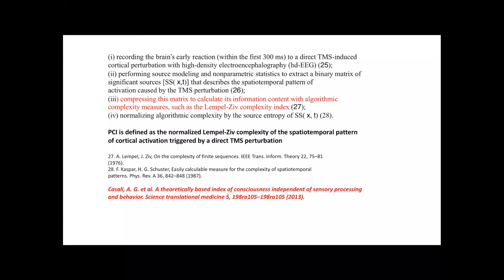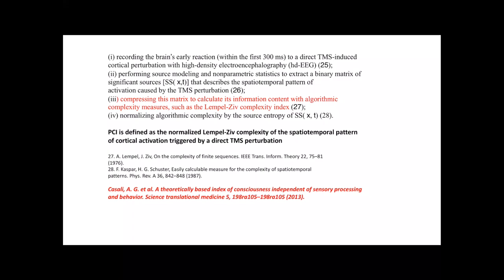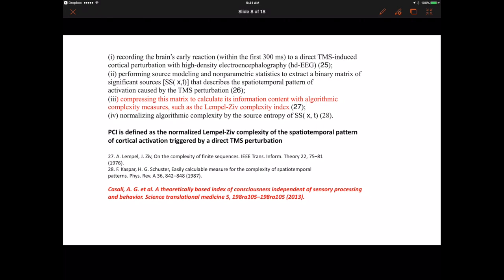You see the stepwise procedure that is utilized in implementing this PCI, Perturbation Complexity Index. So you do a recording of the brain's activity in response to a transcranial magnetic impulse and you record the cortical perturbation with a high density EEG. So these are like 200 plus electrodes distributed over your scalp. Now then you capture the signal, the time series coming from all 200 plus electrodes and you model this in a specific statistical instrument that allows you to extract a matrix that describes the time series over these different electrodes.